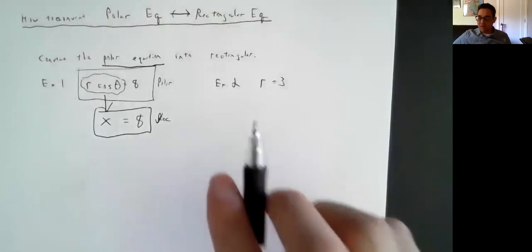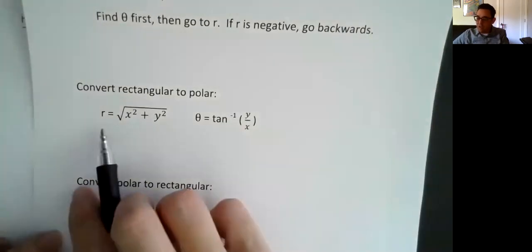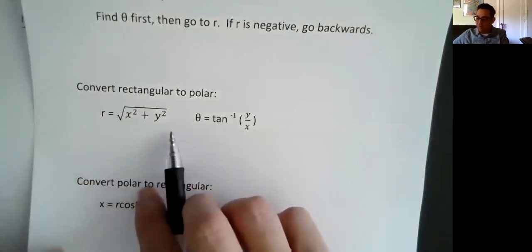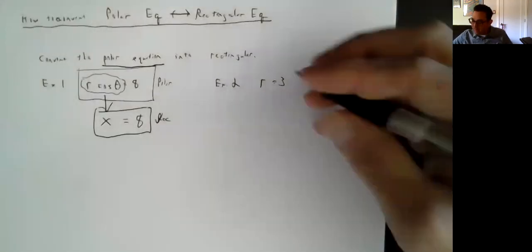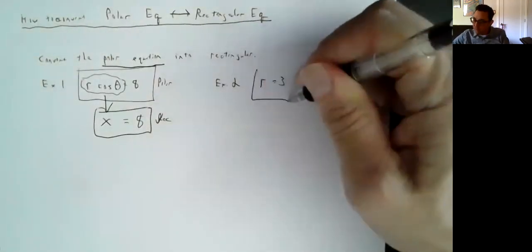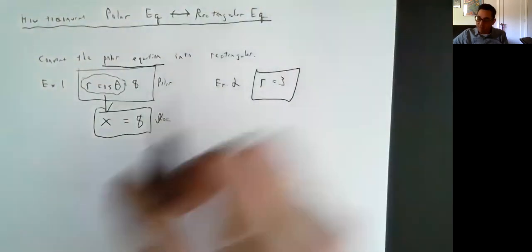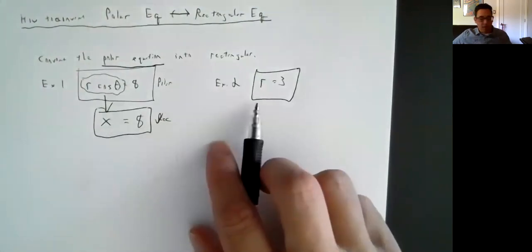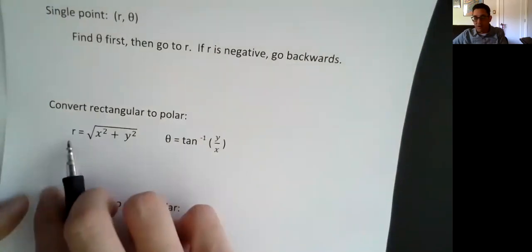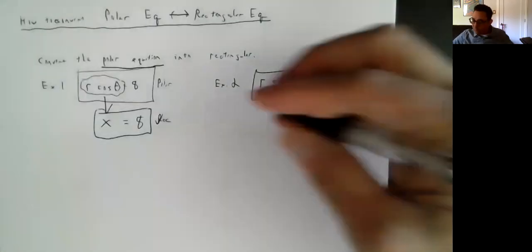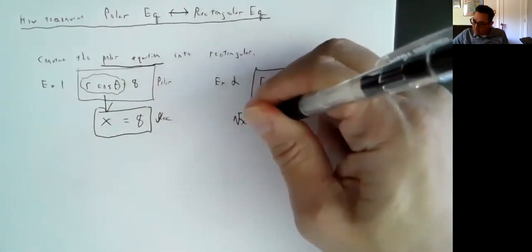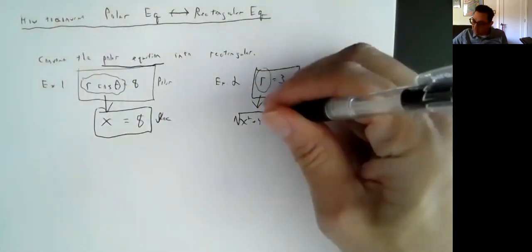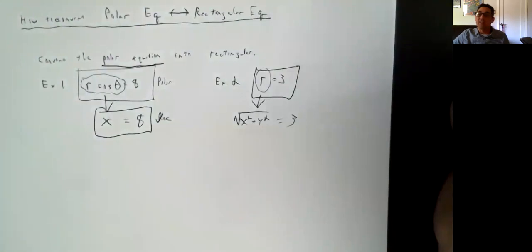For example two, r = 3. We have this r, and r is the same thing as the square root of x² + y². So I'm going to change r into that. This is polar because it has an r. It does not have a theta, just like x = 3 doesn't have a y — you don't always have both. So the equation becomes: square root of x² + y² = 3. Those two equations are the same.